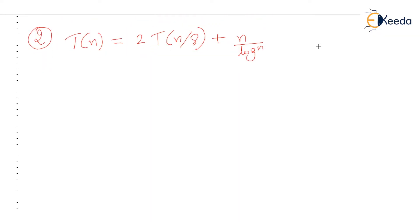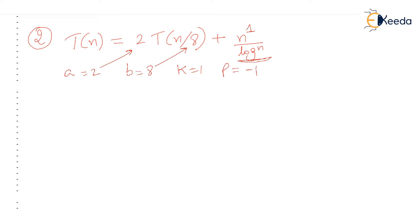Let's see the second exercise. What is the time complexity for this recurrence relation? Here a is equal to 2, b is equal to 8, k is equal to 1 because we have n raised to 1, and p is equal to minus 1 — observe that the log n term is in the denominator, so taking it up gives log(n) to the base 2 raised to minus 1. Now we check the relation between a and b raised to k: clearly b^k is 8 and a is just 2, so a is less than b^k.